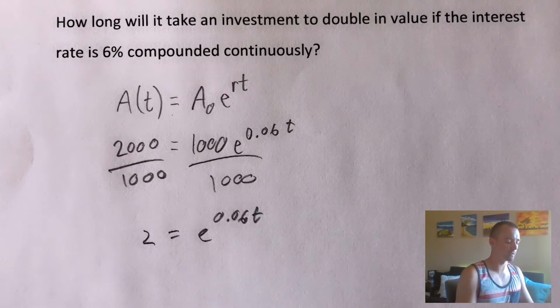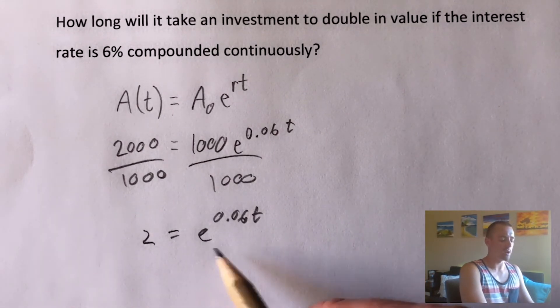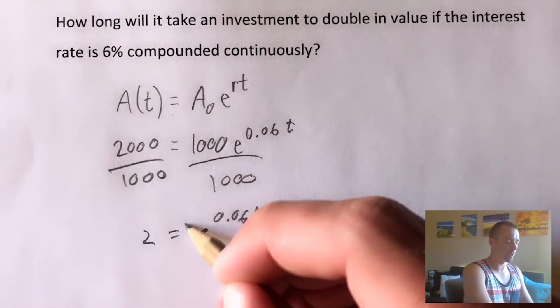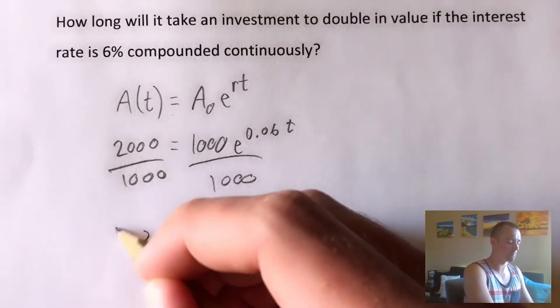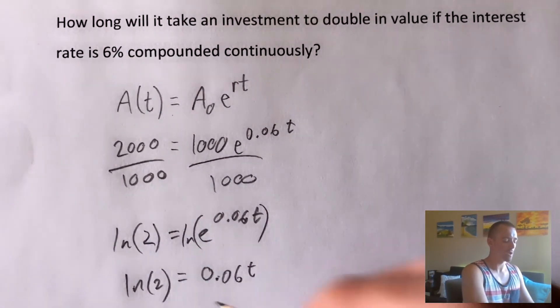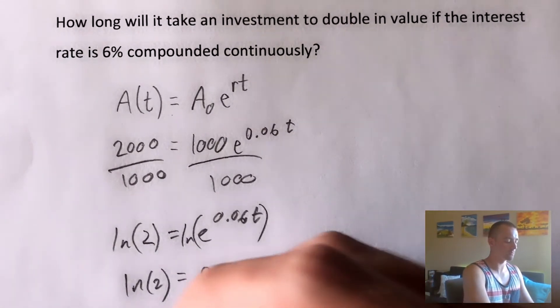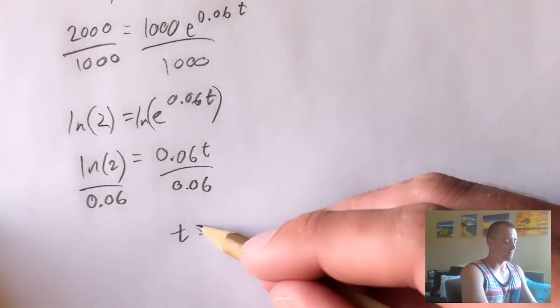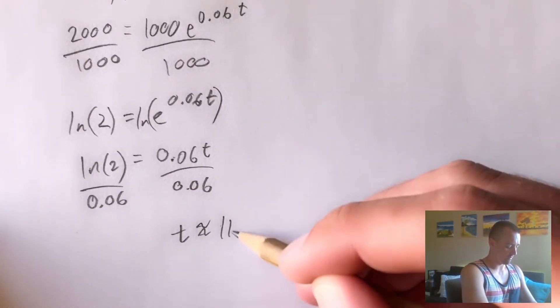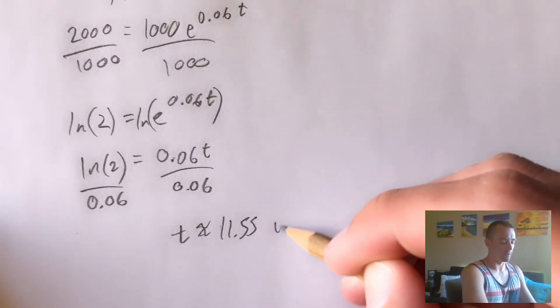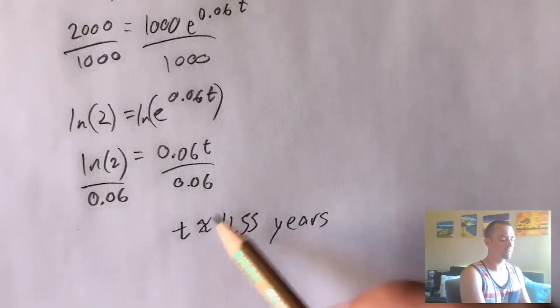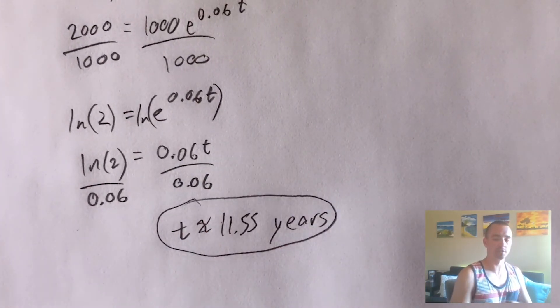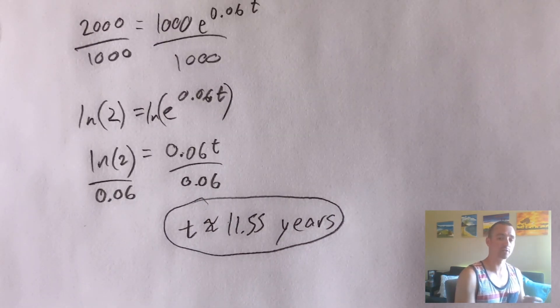Right, so no matter what we put there, that's how that's going to end up working out. Now to get this t out of the power, we can just take the natural log of both sides, and then divide by 0.06. And that tells us that our t is going to be about 11.55 years. And that's how long we would expect it to take to double our investment at 6% interest compounded continuously.